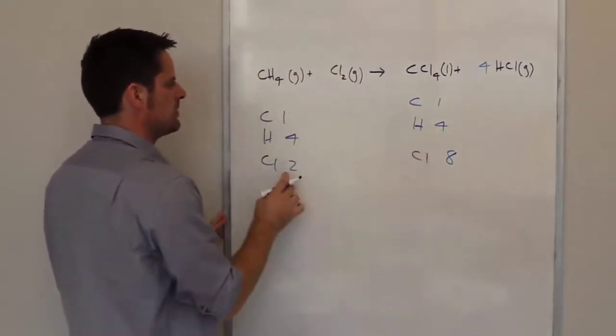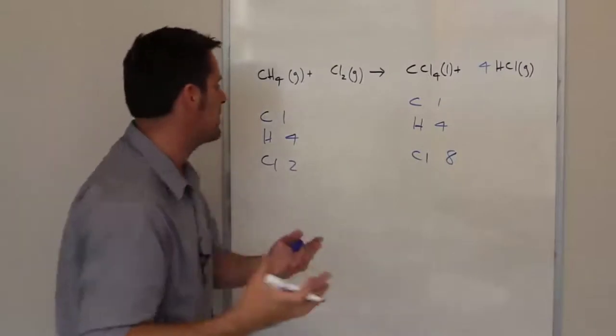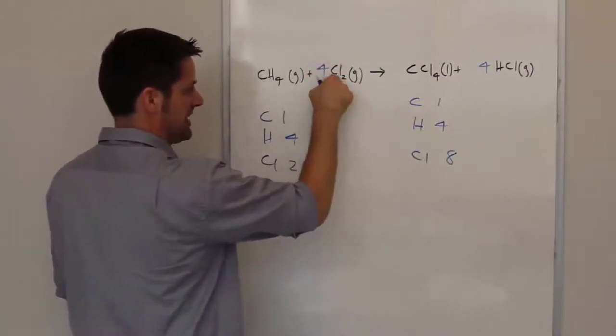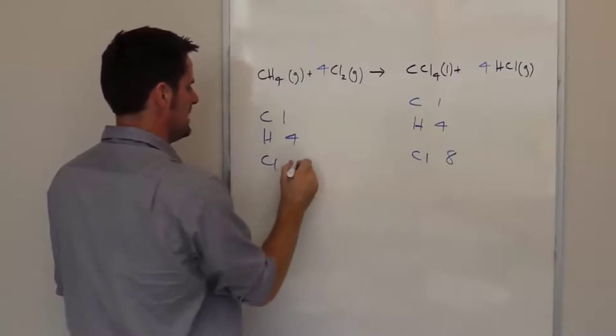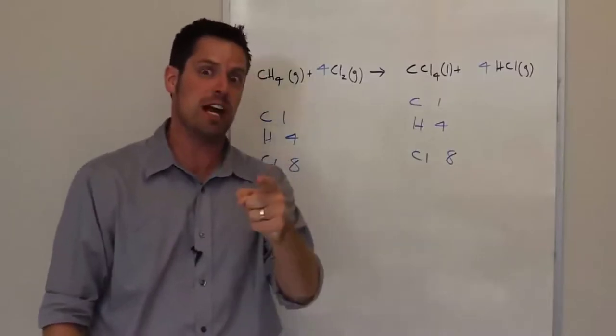I only have two on the left. Can I fix that? That two is the only problem. If I multiply this by four, that four multiplied by that two gives me eight chlorine atoms. So that is a balanced stoichiometric equation.